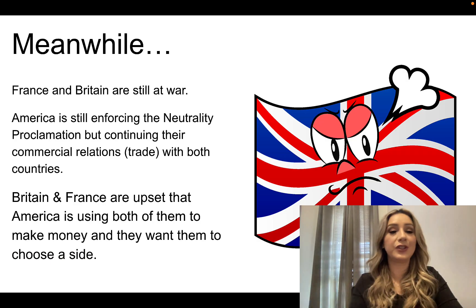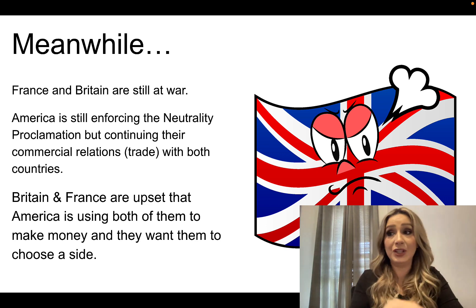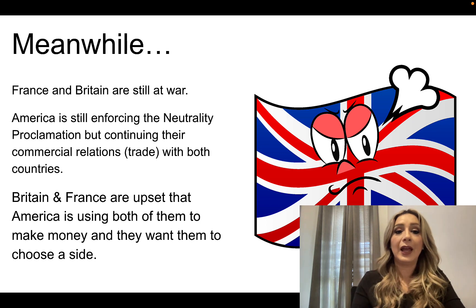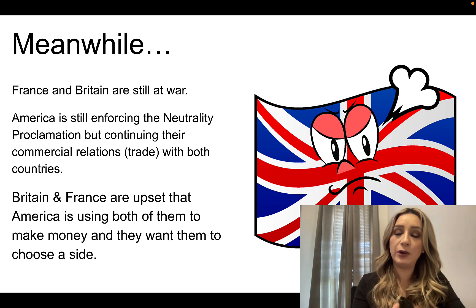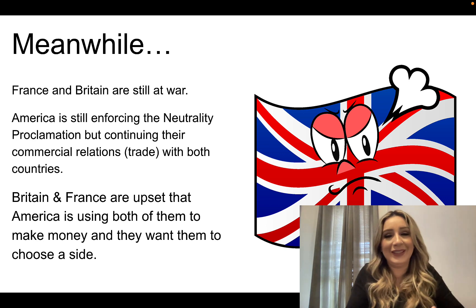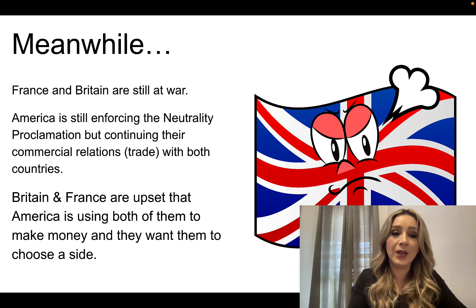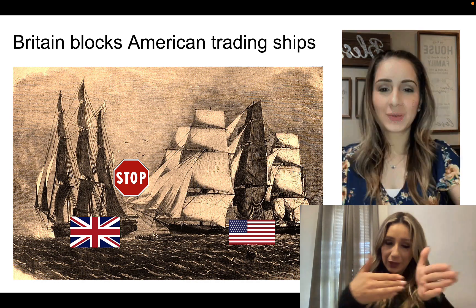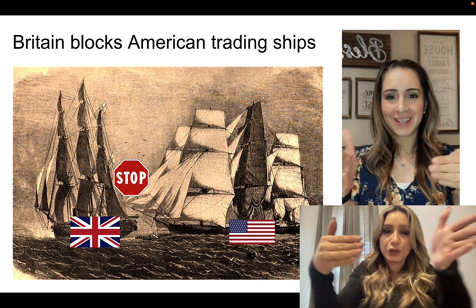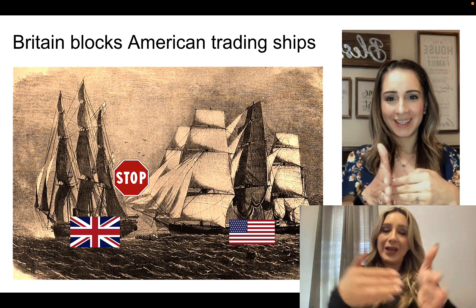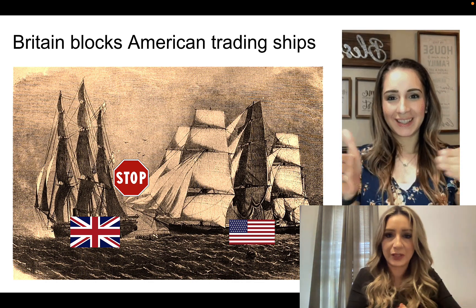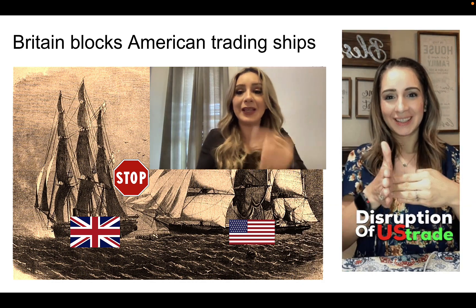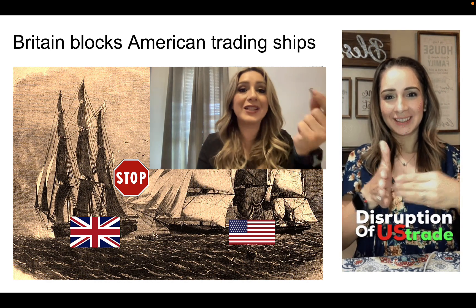Meanwhile, as Jefferson is purchasing the Louisiana territory, France and Britain are still fighting — continuing the war they had back when Washington first became president. Jefferson wants to honor and enforce the neutrality proclamation, trying not to get involved, but he's continuing commercial relations with both countries, meaning we're still trading with both. Britain and France are getting fed up that America is using both of them to make money, and they want America to choose a side. So Britain starts to block American trading ships, disrupting US trade — not allowing us to trade with other countries.